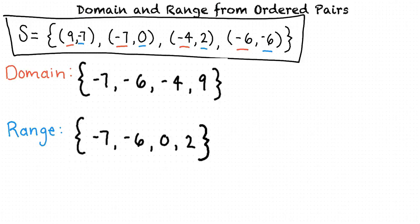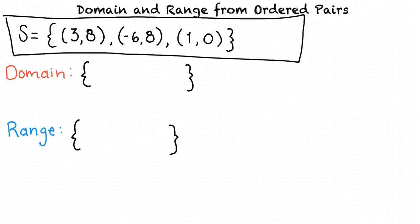Okay, I think that makes sense. Can I try an example problem to make sure I understand this topic? Absolutely. Say we are given the relation s as: s equals (3, 8), (-6, 8), and (1, 0), and are asked to give the domain and range of s in set notation.